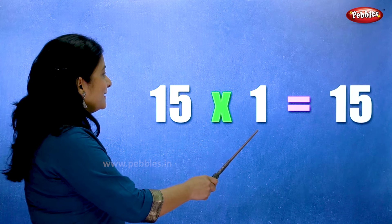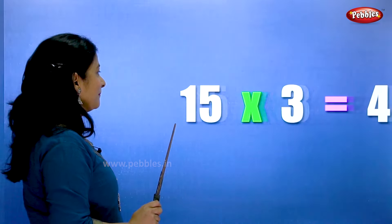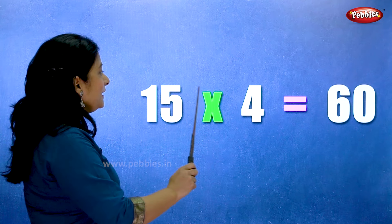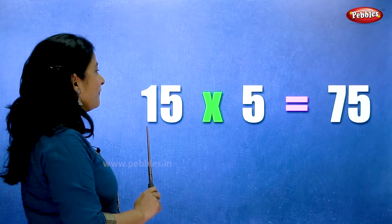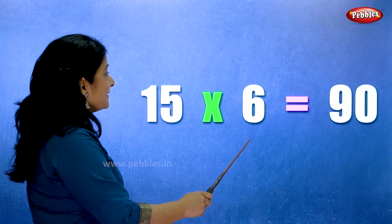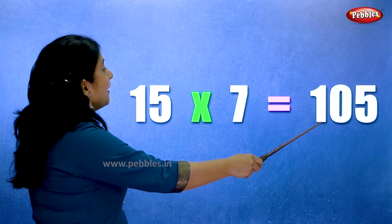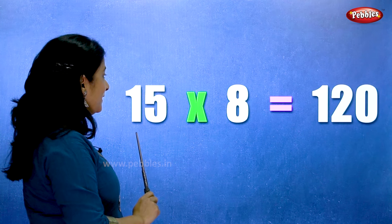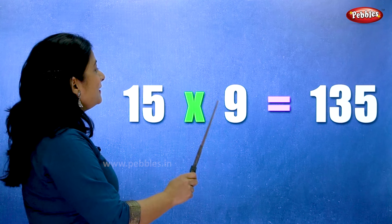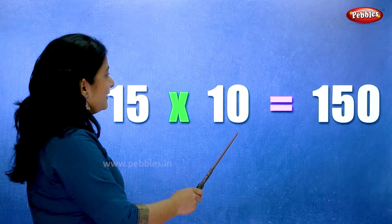Fifteen ones are fifteen. Fifteen twos are thirty. Fifteen threes are forty-five. Fifteen fours are sixty. Fifteen fives are seventy-five. Fifteen sixes are ninety. Fifteen sevens are hundred and five. Fifteen eights are one twenty. Fifteen nines are one thirty-five. Fifteen tens are one fifty.